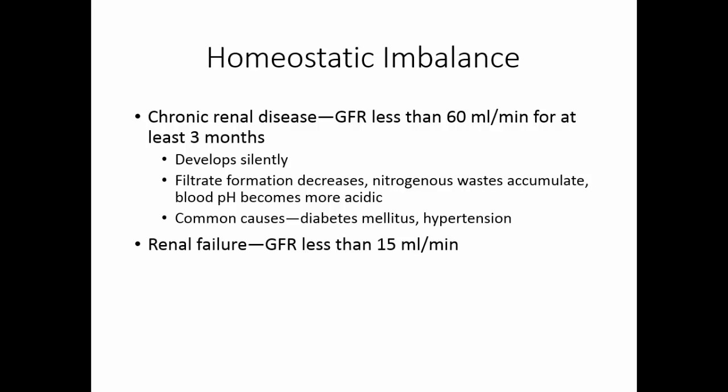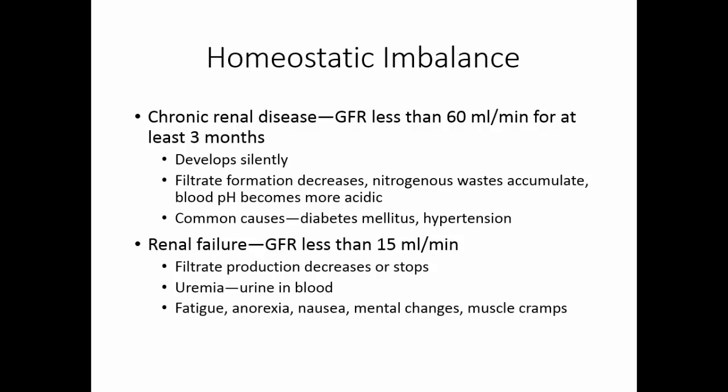Renal failure occurs when the glomerular filtration rate drops to less than 15 milliliters per minute. Filtrate production decreases or stops completely, and a condition called uremia develops — this literally means urine in the blood. There are so many nitrogenous waste products in the blood and the kidneys are not clearing any of them. People in renal failure feel fatigued, have anorexia, nausea, mental changes, and experience muscle cramps.